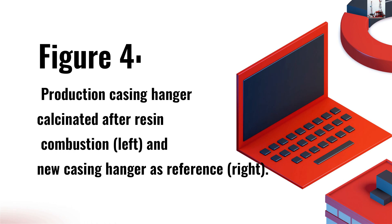Figure number four: production casing hanger calcinated after resin combustion (left), and new casing hanger referenced on the right.